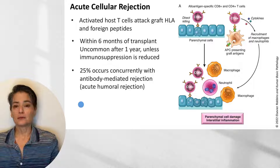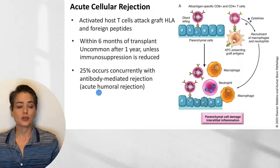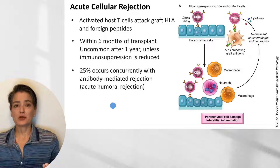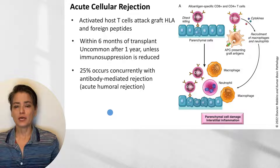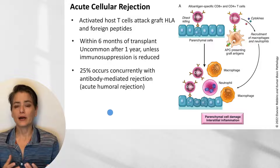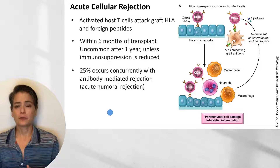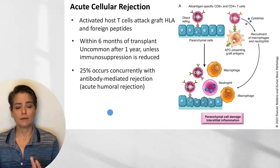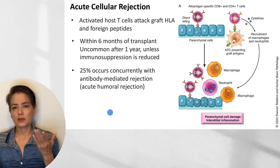Depending on the study, acute cellular rejection occurs concurrently with acute antibody-mediated rejection somewhere between about a quarter of the time to essentially all of the time. From a clinical standpoint, as soon as acute rejection is recognized — first by changes in renal function based on laboratory values, then by renal biopsy — immunosuppression is increased.